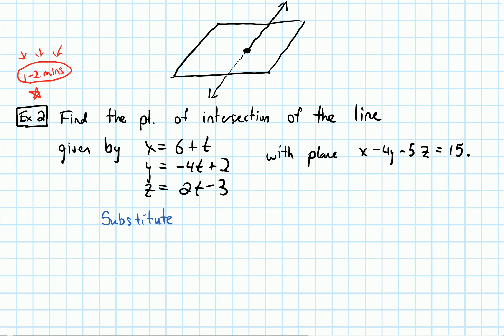So if I plug x into the plane equation, we get (6 + t) and then minus 4, and that's going to get multiplied by y, which is (-4t + 2), and then we have the minus 5, getting multiplied by z, which is (2t - 3). And this equals 15 on the other side.